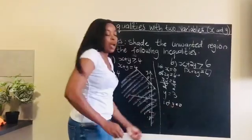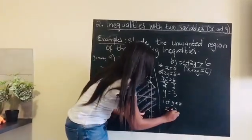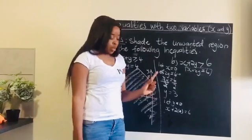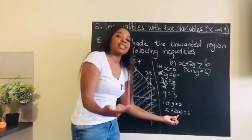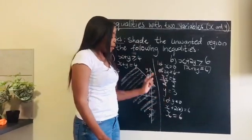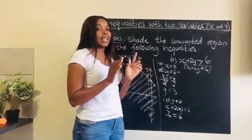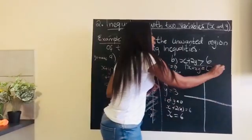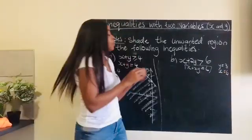So I have y equal to three. That means the graph will cut the y-axis at three. Now let y be zero: x plus two times zero equals six. Two times zero is zero, so I'm left with x equals six. So the graph cuts the x-axis at six. Those are the numbers I want appearing on my graph.